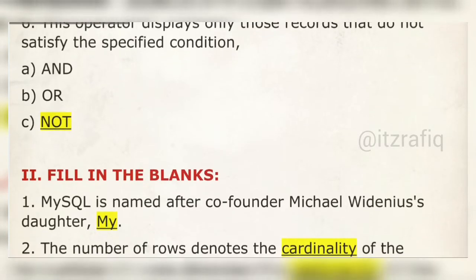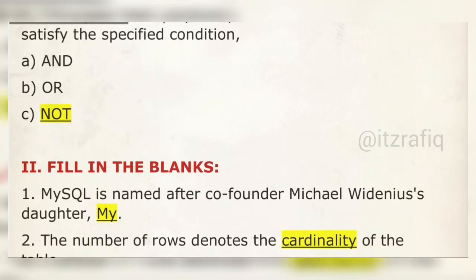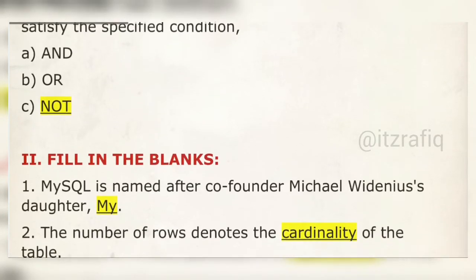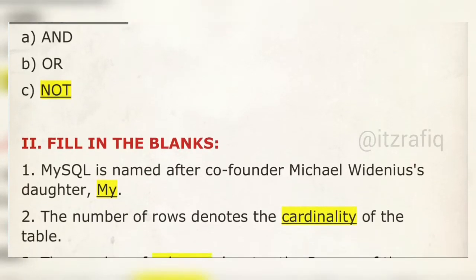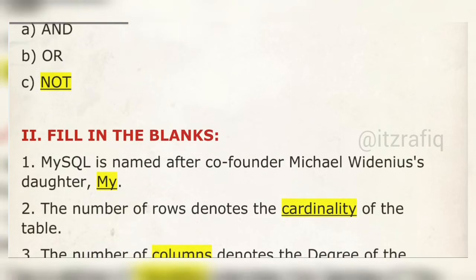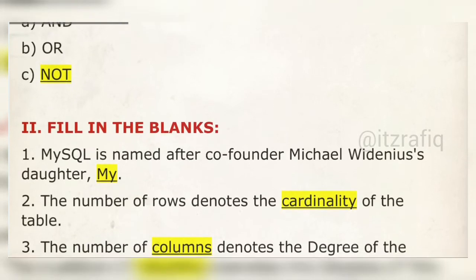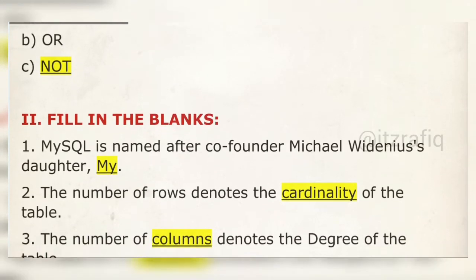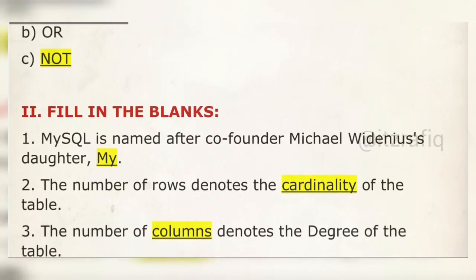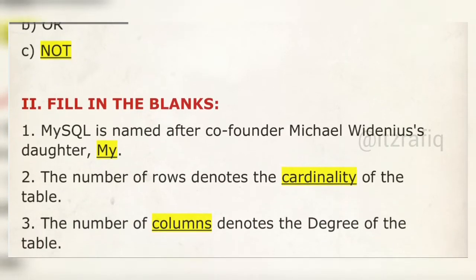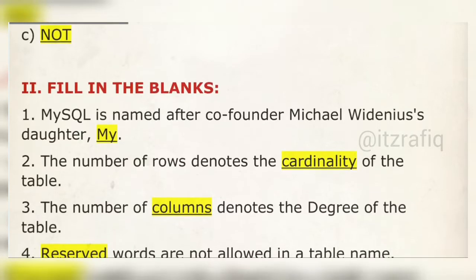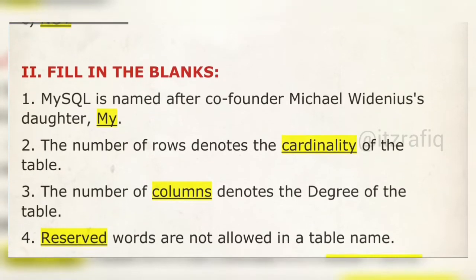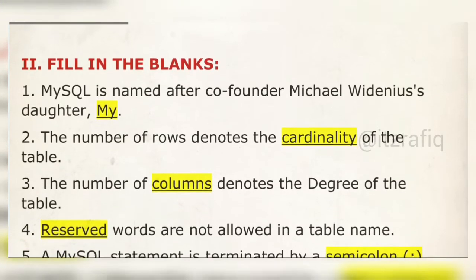Now the fill in the blanks section. Number one: MySQL is named after co-founder Michael Widenius's daughter — the correct answer is 'My'. Number two: the number of rows in a table denotes the cardinality of the table.